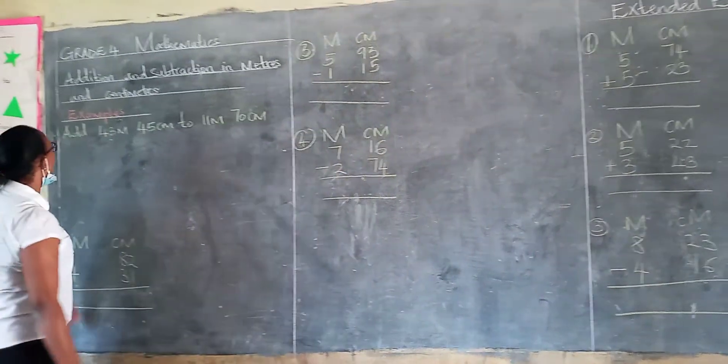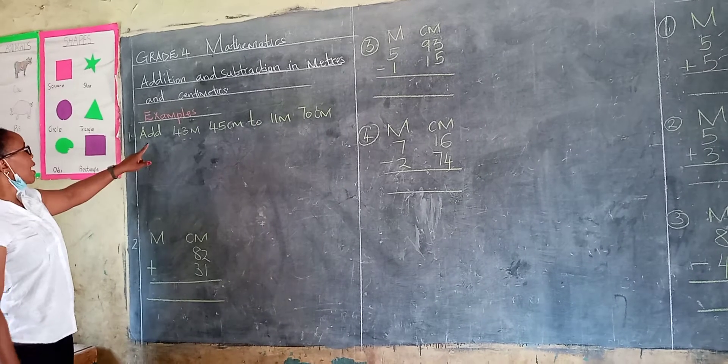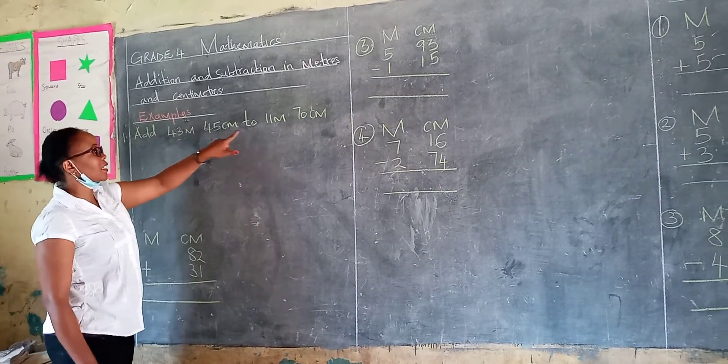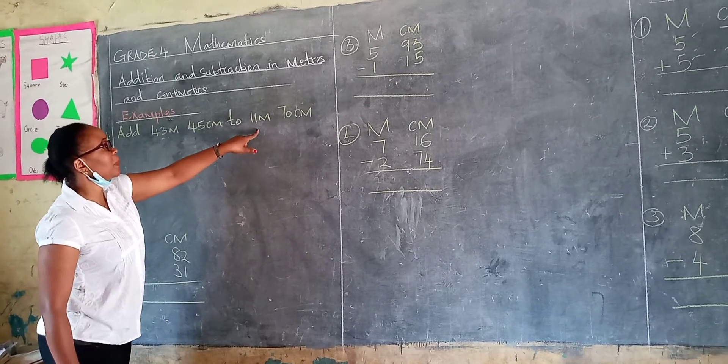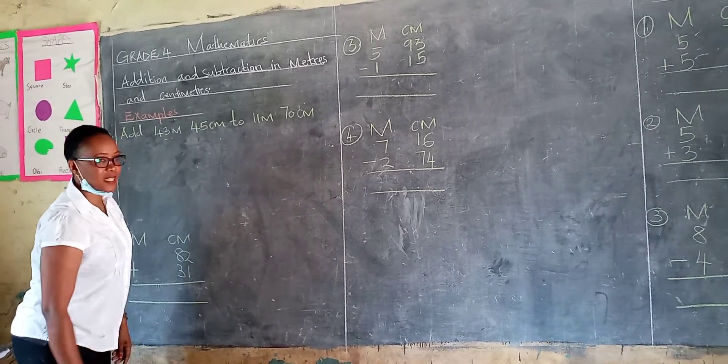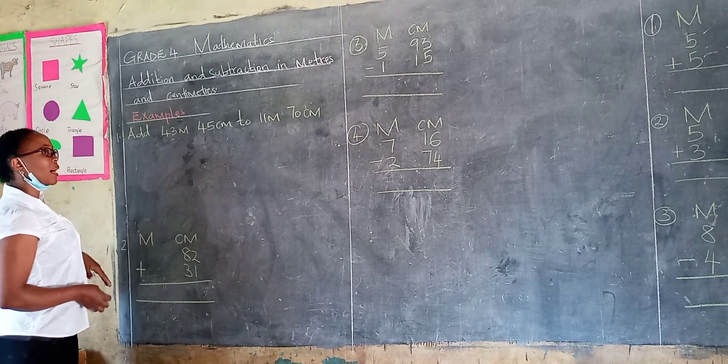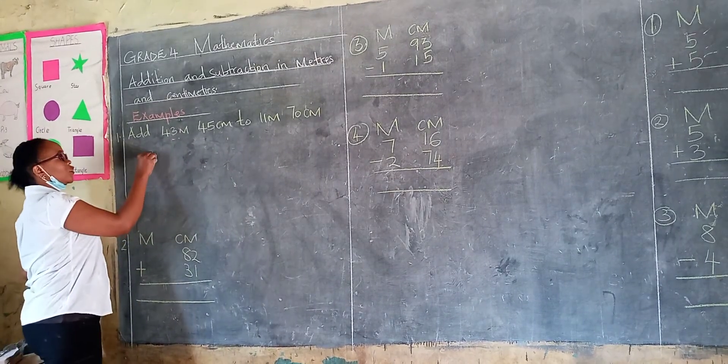So let's do the examples here. We have number 1, add 43 meters 45 centimeters to 11 meters 70 centimeters. Learner, it is always good to align your work vertically. So let's do it together.